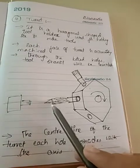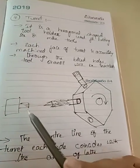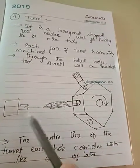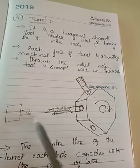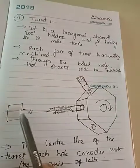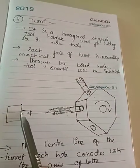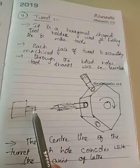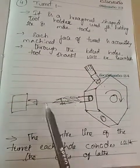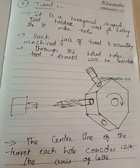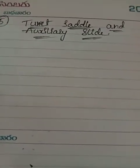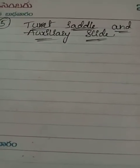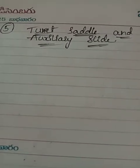The central line of the cutting tool must coincide with the lathe axis. When aligned with the headstock spindle, the tool is compulsorily aligned to coincide with the spindle axis. Our last part is turret saddle and auxiliary slide.